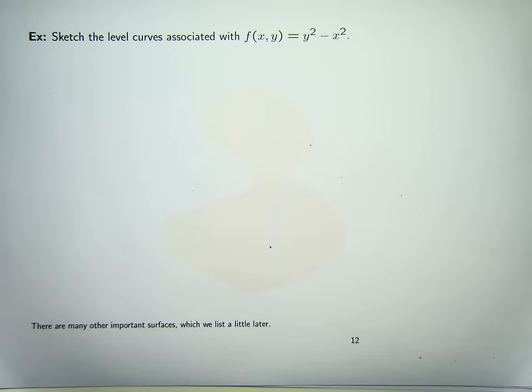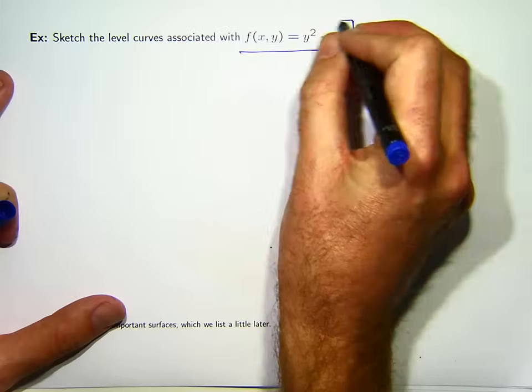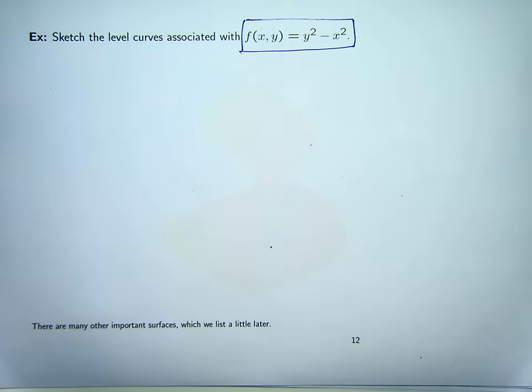Here we have another example from surface sketching, functions of two variables. We're asked to sketch the level curves associated with this function. f of x comma y equals x squared, sorry, equals y squared minus x squared.